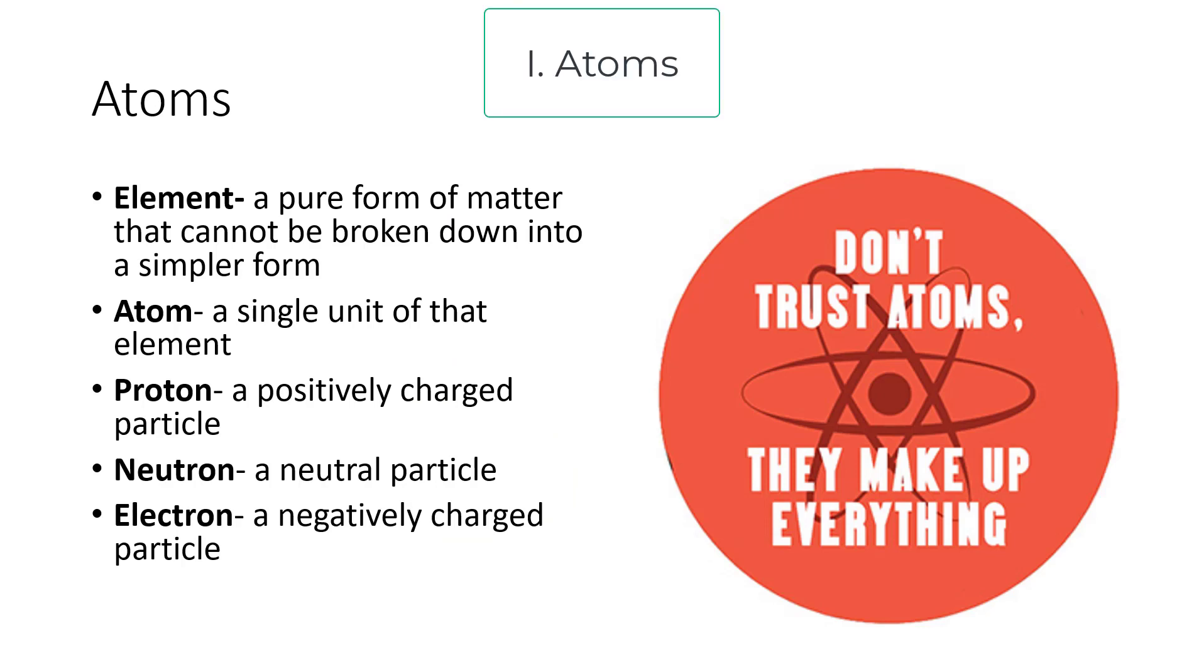First up, atoms. An atom is a single unit of an element, and an element is a pure form of matter that cannot be broken down into a simpler form. Take for example water. We would say the four elements: earth, air, water, and fire. Well, not so much. Water in itself can be broken down into oxygen and hydrogen. These are what we call elements in science. A single unit of oxygen is an oxygen atom.